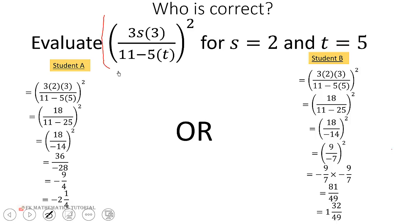So we have this student trying to evaluate this expression for s equals 2 and t equals 5. We'll follow the order of operations correctly. Let's check.